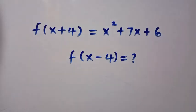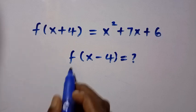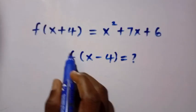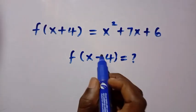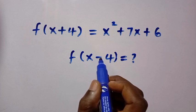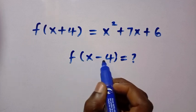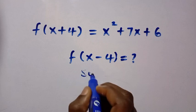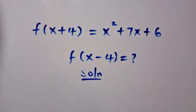Good day viewers, you are welcome. Today we solve a functional equation: we are given f(x+4) = x² + 7x + 6, and we want to find f(x-4). Notice the input changes from positive to negative. Let's solve this using two different methods.